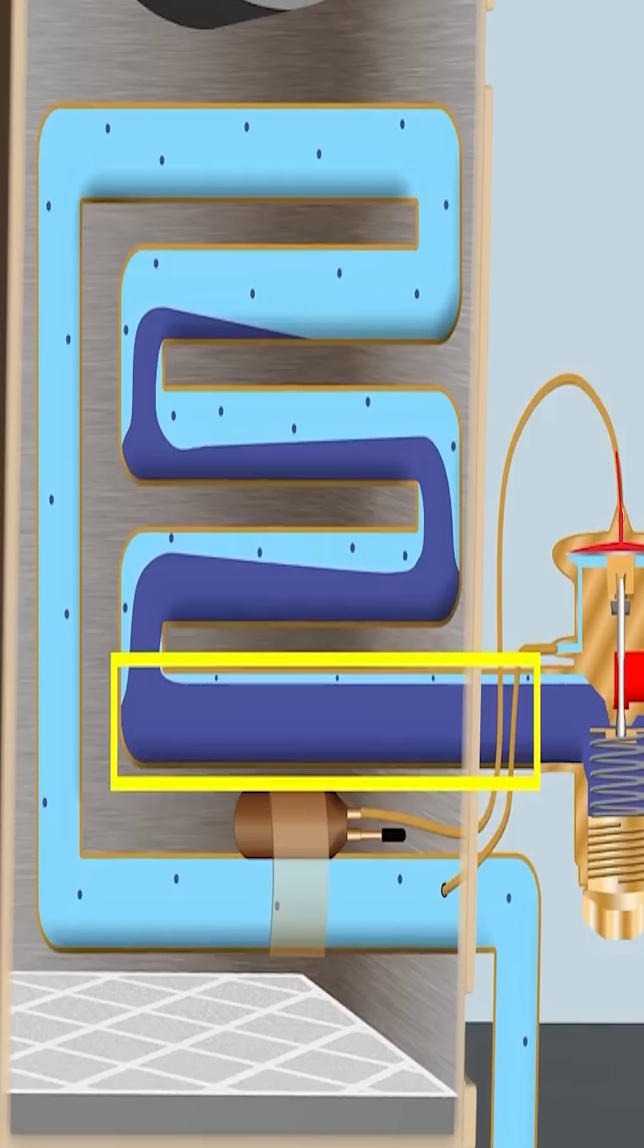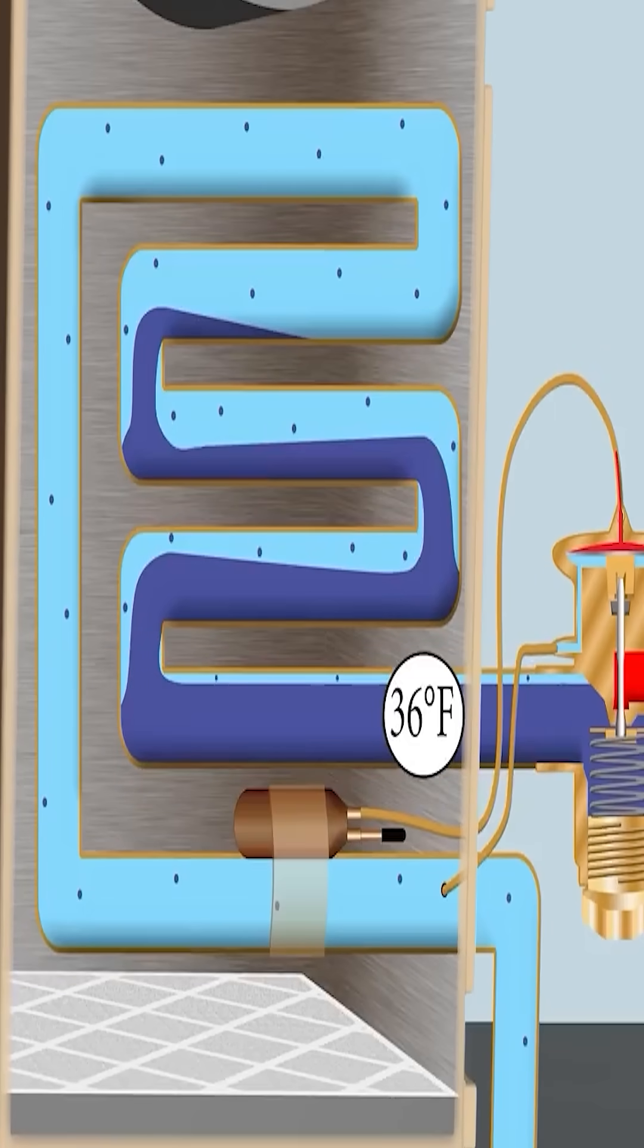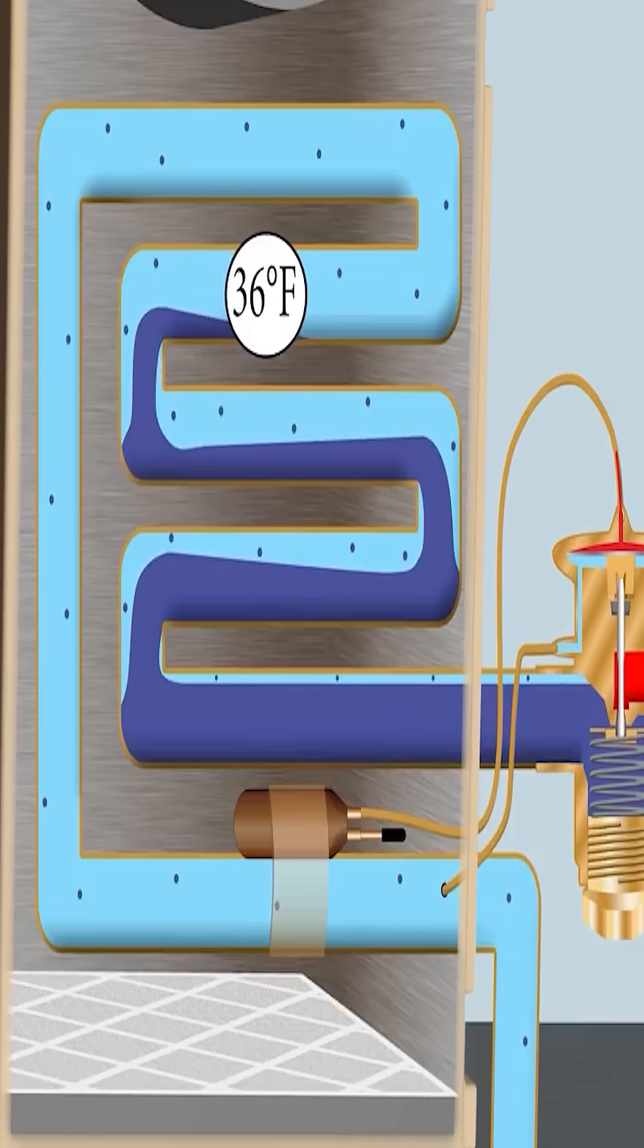We have the liquid refrigerant and the small amount of vapor, it's like 80% liquid, 20% vapor. It's at 36 degrees and it maintains 36 degrees as it's traveling through the tube until it turns into a completely vapor state.